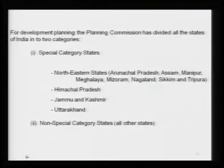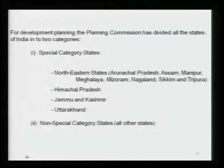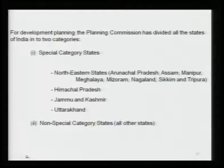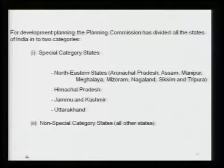The Government of India has divided all states into two categories on the basis of their development status and needs. The special category states are the northeastern states — Arunachal Pradesh, Assam, Manipur, Meghalaya, Mizoram, Nagaland, Sikkim, and Tripura — the so-called Seven Sisters — plus Himachal Pradesh, Jammu and Kashmir, and Uttarakhand. All of them are hilly and border states of India. The problems of these states have to be tackled on a priority basis with special emphasis.